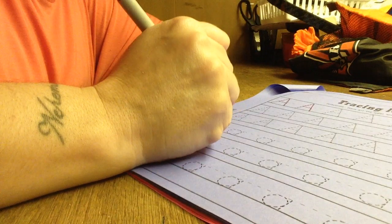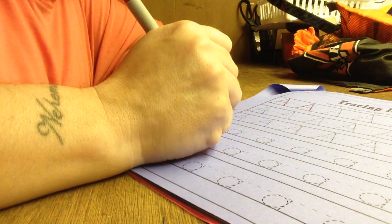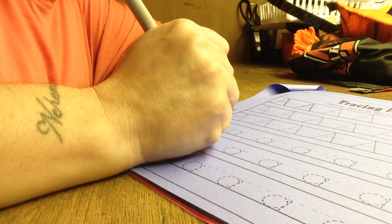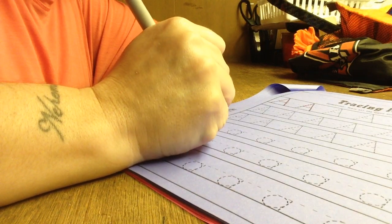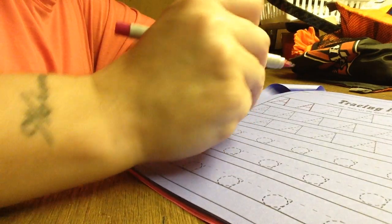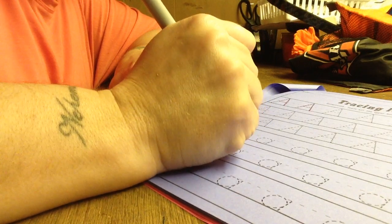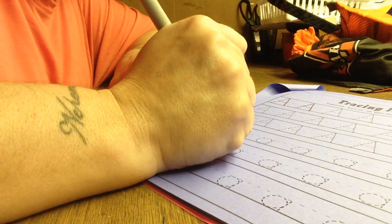Okay, and then on the bottom three rows there is the lowercase a. So I want you to do the line and then do the circle for the lowercase a. Make sure that they're connecting. So do your line down and then start at the top and do your circle.